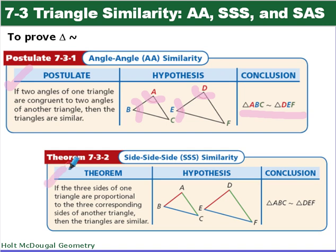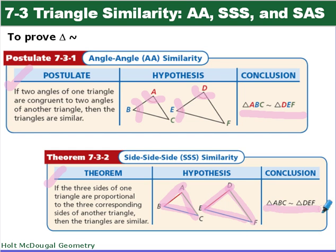The next theorem is side-side-side similarity: if three sides of one triangle are proportional to three corresponding sides of another triangle, then the triangles are similar. So AB corresponds to DE, AC corresponds to DF, and BC corresponds to DF. They're all proportional, so triangle ABC is similar to triangle DEF.